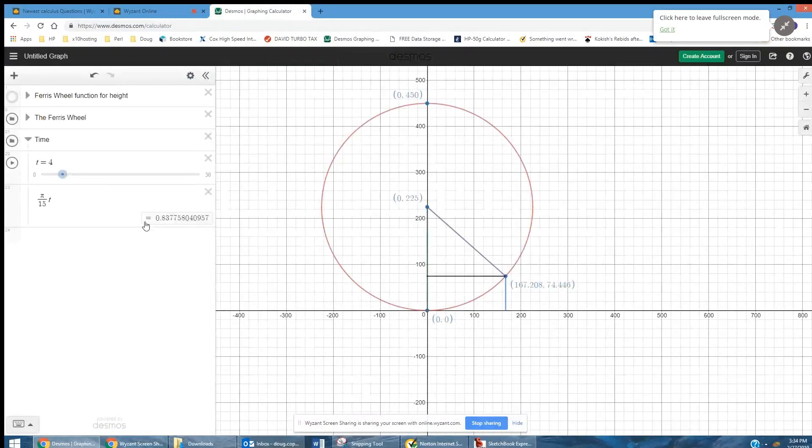Go to Desmos and you can see here that I have this time slider. And as the time increases, that angle increases and so does the height that the person is above the ground.